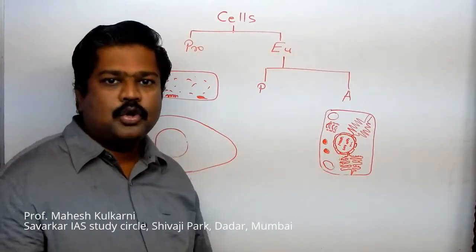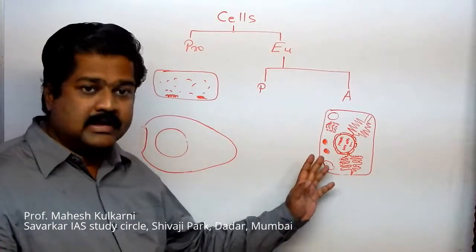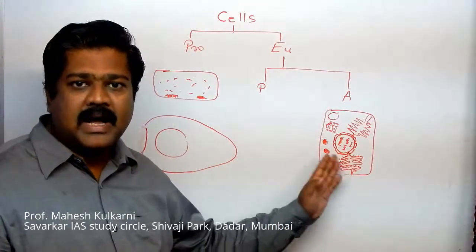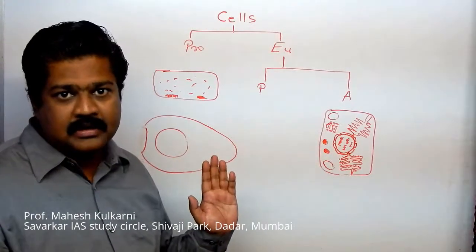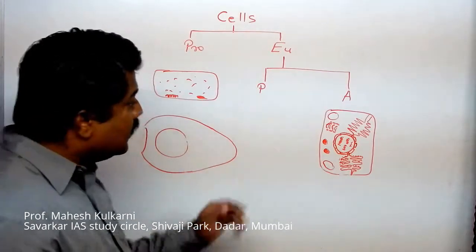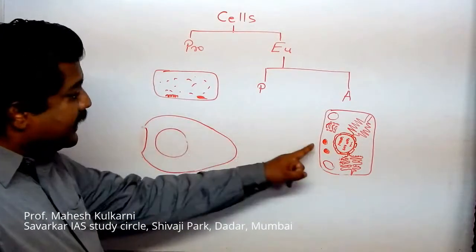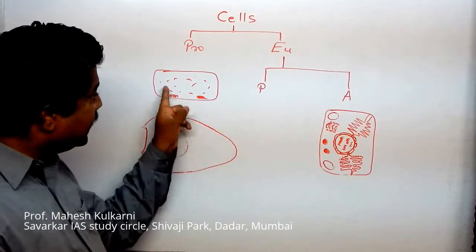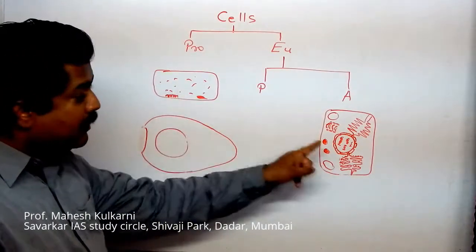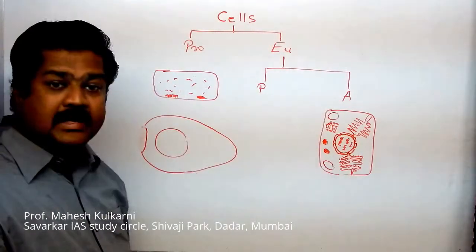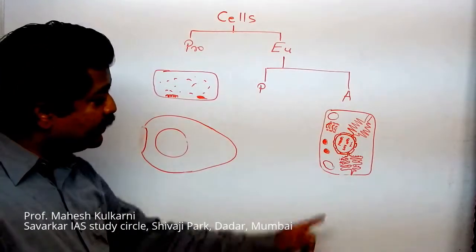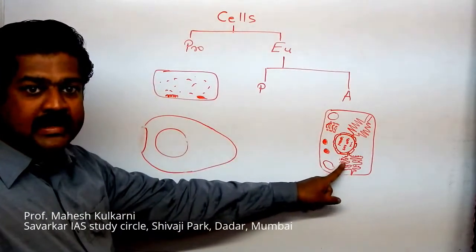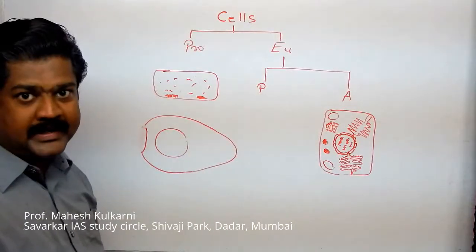I am showing here only a few organelles — this is not the entire material inside the cell. Now I must compare: in the prokaryotic cell, no organelles are visible, whereas in the eukaryotic cell, various organelles are present. This is the basic difference — eukaryotic cells have membrane-bound organelles; prokaryotic cells do not have membrane-bound organelles.